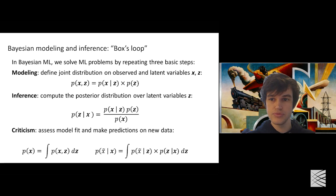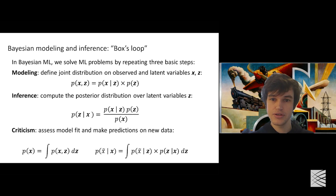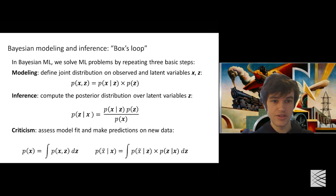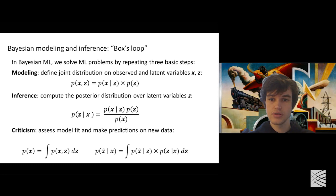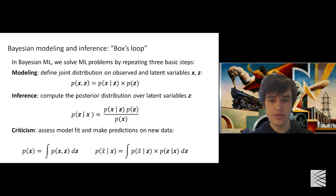In Bayesian machine learning, we solve problems by repeating three basic steps in a loop often called Box's loop, after the famous statistician George Box, who wrote it down in the seventies. The first step is defining a probabilistic model — writing down a joint probability distribution over all observed variables and all unobserved variables, which could be missing data or things we might traditionally think of as parameters.